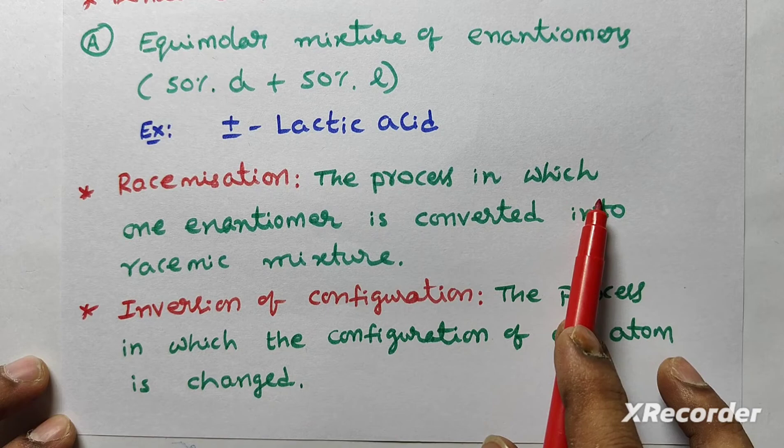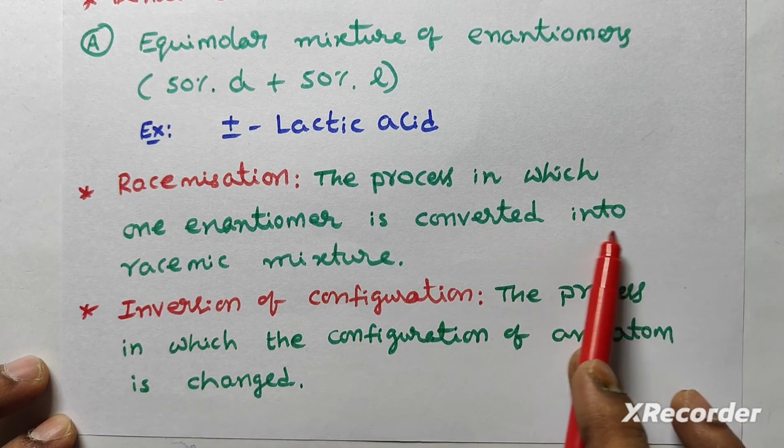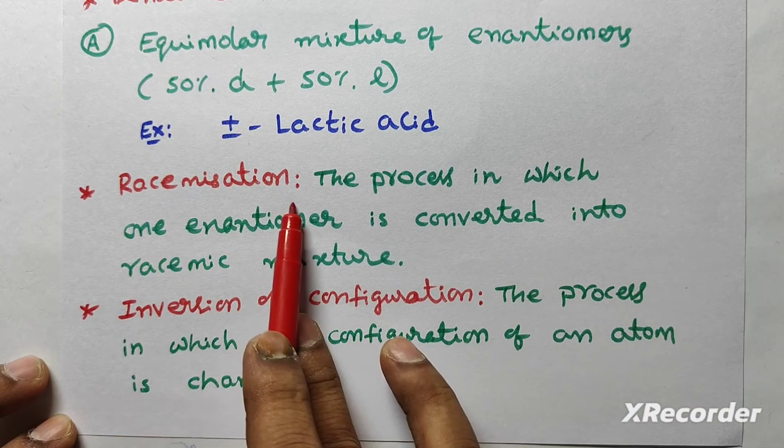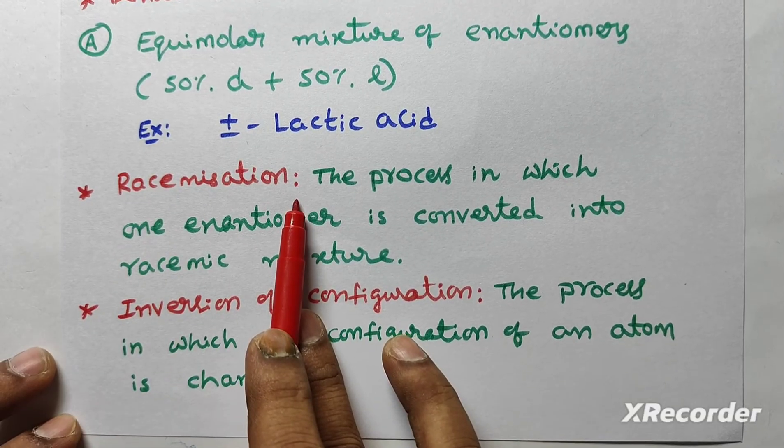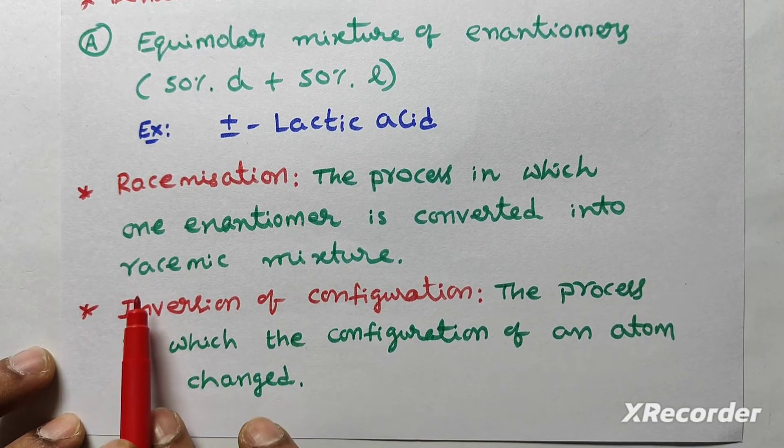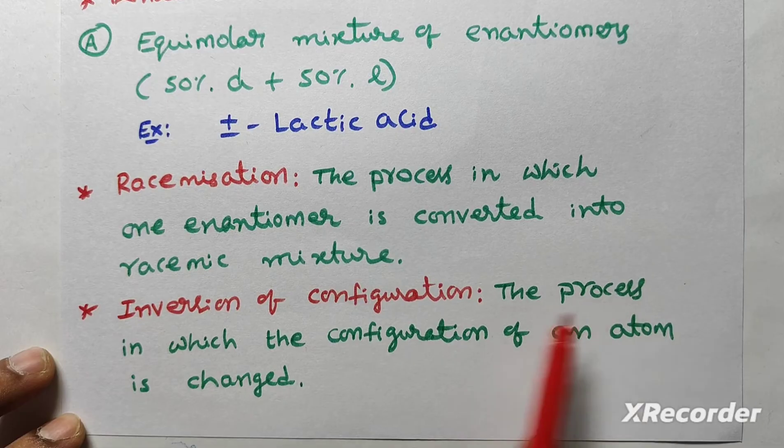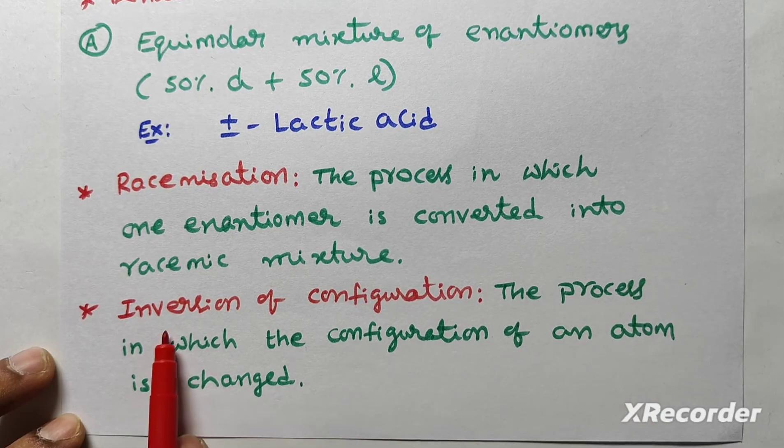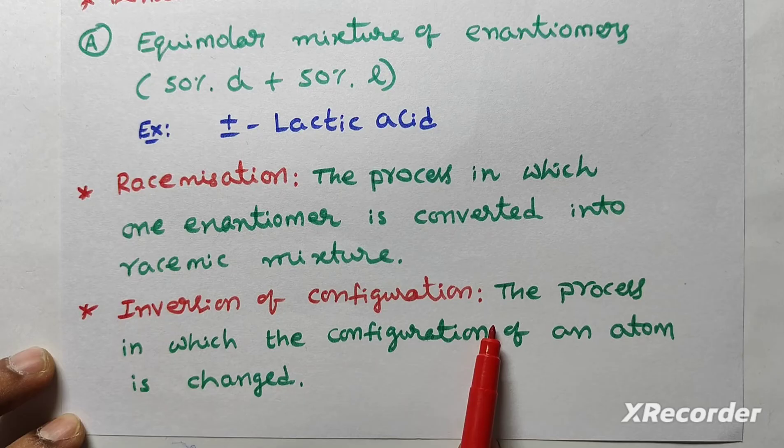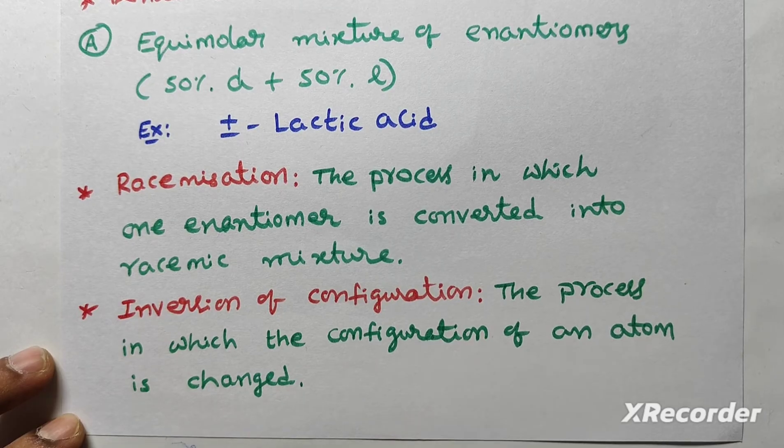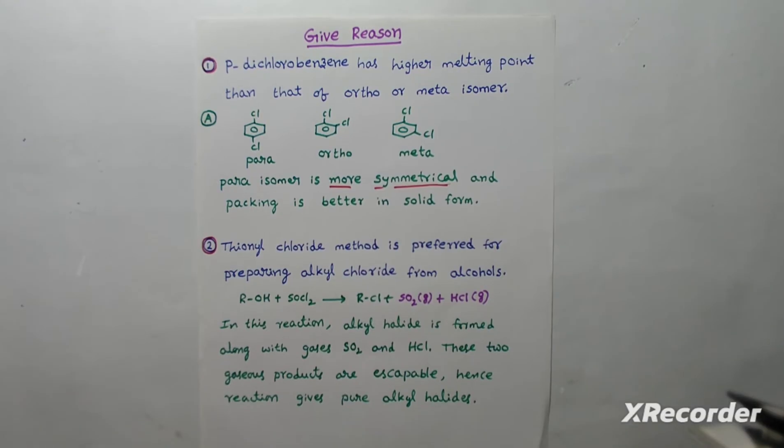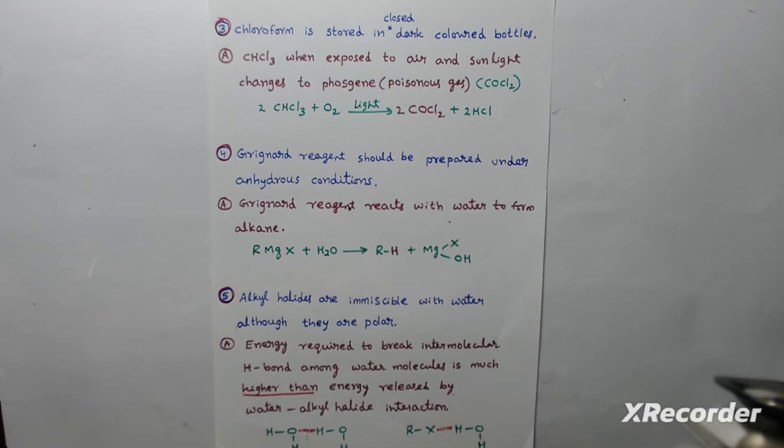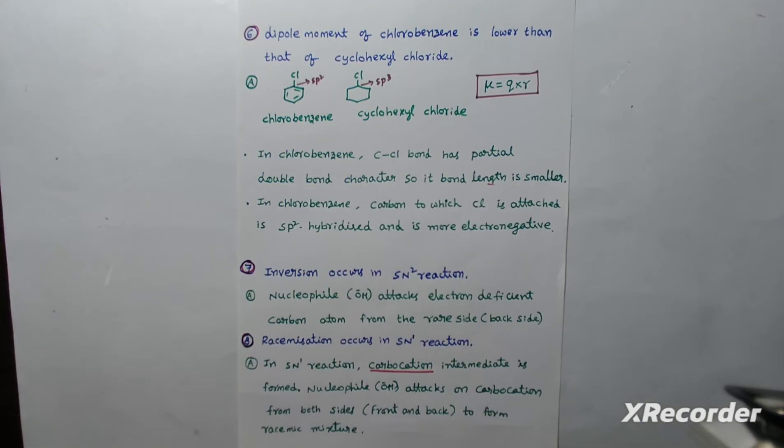What is racemization? The process in which one enantiomer is converted into racemic mixture is called racemization. Racemization takes place in which reaction? SN1 reaction. Inversion of configuration: The process in which configuration of an atom is changed is called inversion of configuration which can take place in which reaction? SN2 reaction. Take screenshot of this and write in your class notes. Have you taken screenshot?